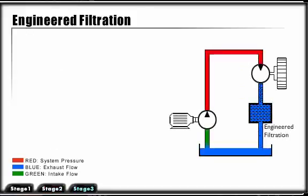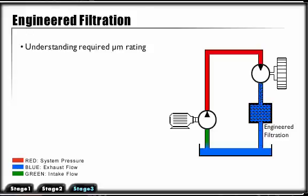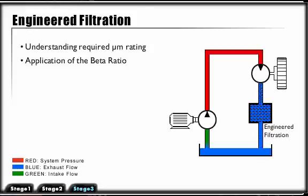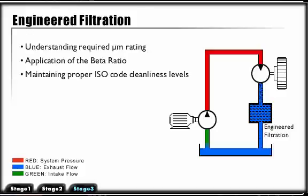To prevent silting, early component wear, and eventual system failure, engineered filtration is required. Engineered filtration includes understanding required micron rating, application of the beta ratio, maintaining proper ISO code cleanliness levels, and filter location specific to the system design and environment.